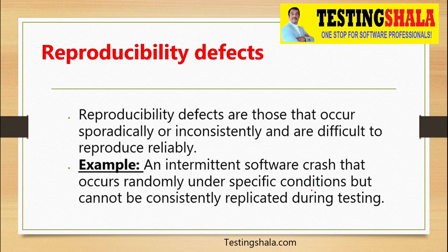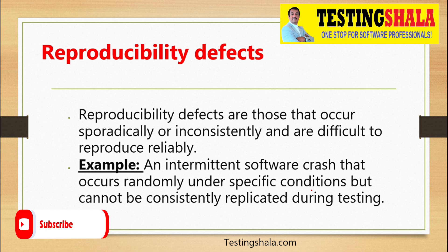The final type is reproducibility defects. Reproducibility defects are those that occur sporadically or inconsistently and are difficult to reproduce reliably. When defects cannot be consistently reproduced, they are logged under the reproducibility defects category. These are the various defect classifications we normally make in the software testing area.